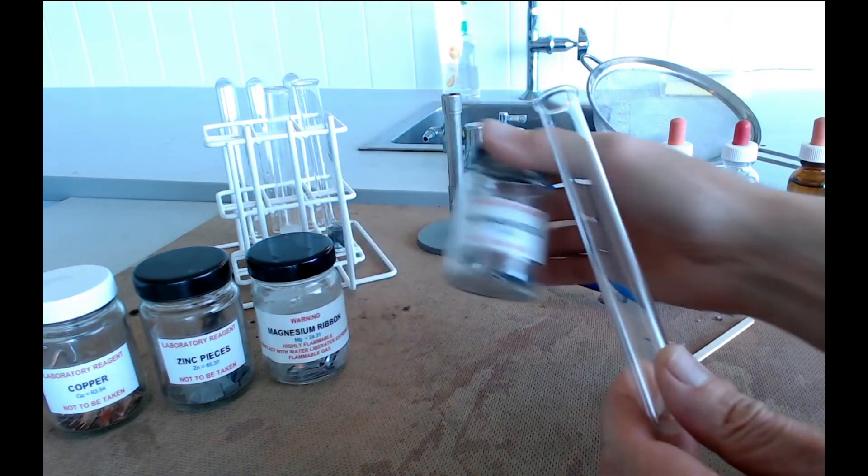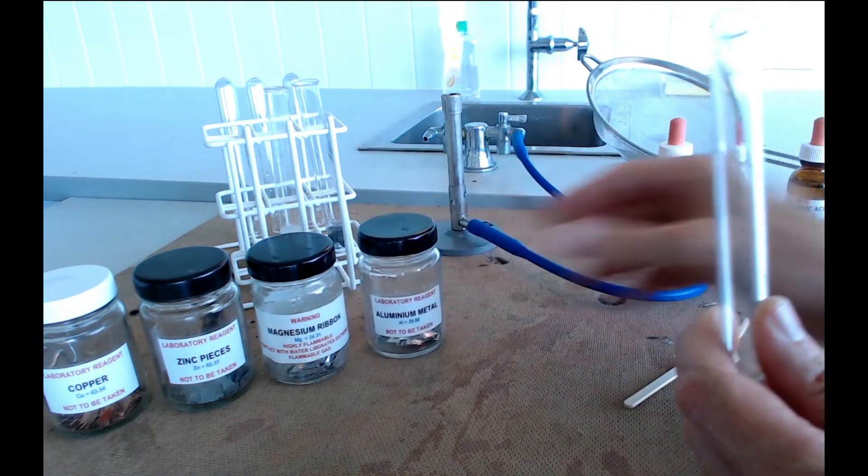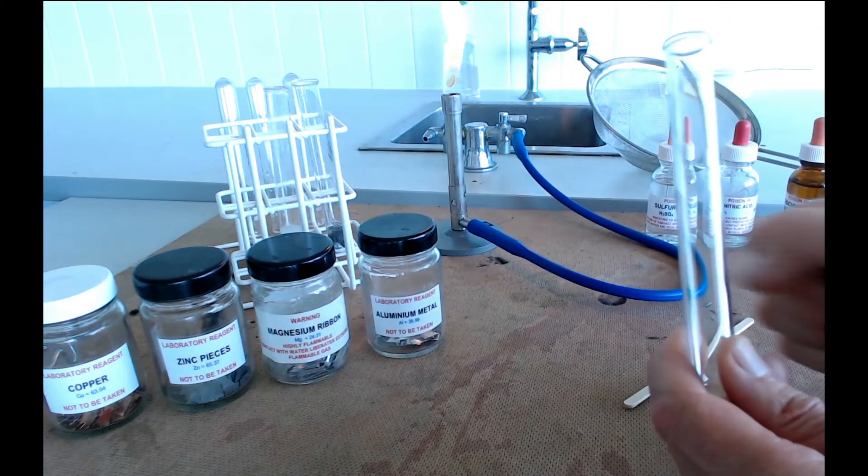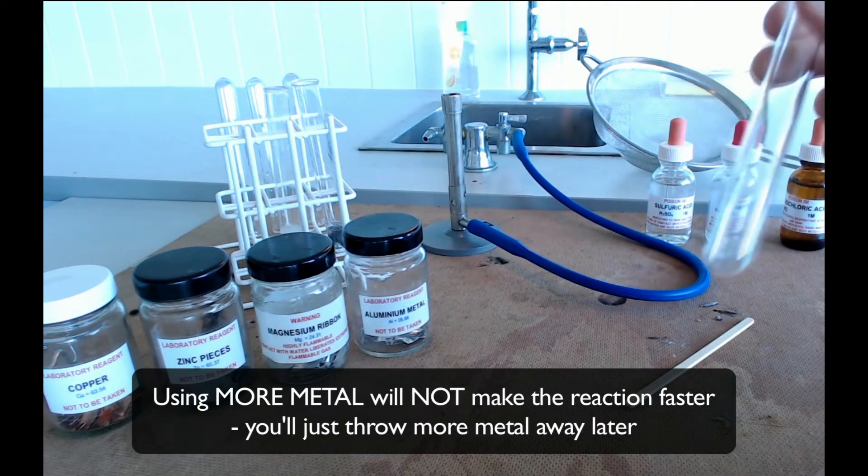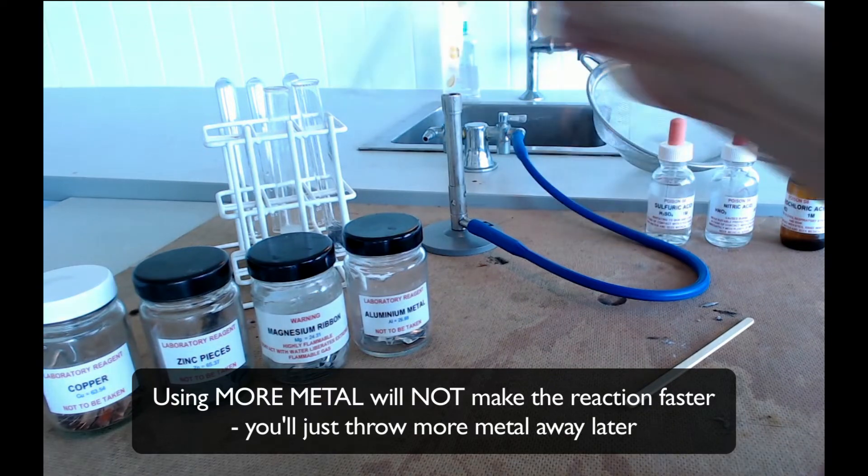So let's say you wanted to do aluminium next. We take some acid, put it in the test tube, put the aluminium in there with it. Give it a bit of a swirl and see if it starts reacting or not.